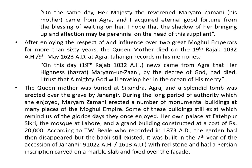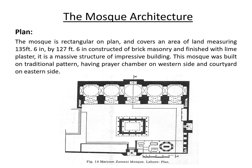The mosque architecture: The mosque is rectangular in plan and covers an area measuring 135 feet 6 inches by 127 feet 6 inches, constructed of brick masonry and finished with lime plaster. It is a massive structure. The mosque was built on a traditional pattern, having the prayer chamber on the western side and the courtyard on the eastern side.